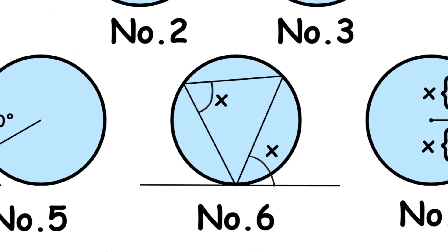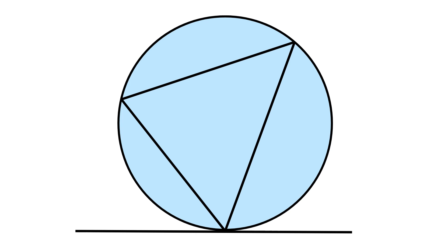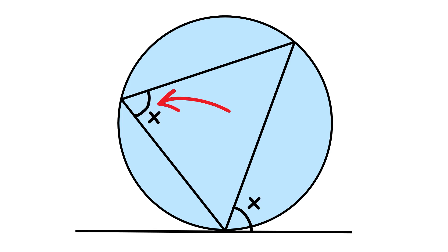The sixth circle theorem is the alternate segment theorem. For any circle, the angle formed between the tangent and the chord through the point of contact of the tangent is equal to the angle formed by the chord in the alternate segment. This one's a bit complicated, but if you look at the diagram, you'll understand how it works.